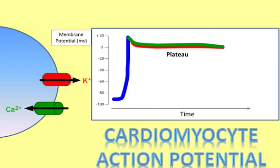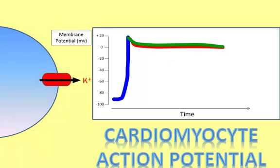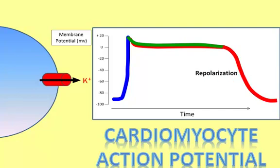Following the plateau, calcium channels close, but voltage-gated potassium channels remain open. Since potassium ions are positively charged, their efflux leads to a drop in the membrane potential towards a more negative value. This phase of the action potential is called repolarization. Repolarization continues until we once again reach negative 90 millivolts, the membrane potential of a resting cell.